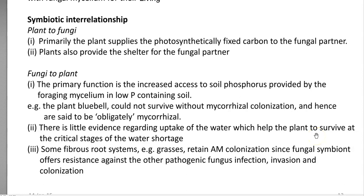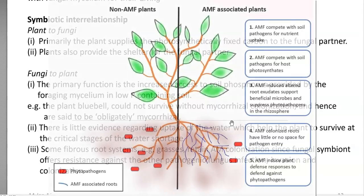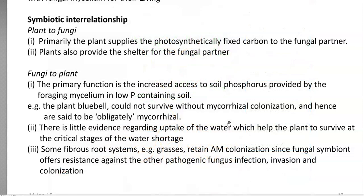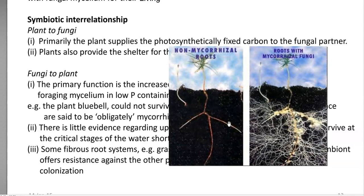Another point is that mycorrhizal association can help in taking up water for the plant system, aiding survival during critical stages of water shortage — though very little scientific evidence is available for this. The association of herbuscular mycorrhizal with plants that have fibrous root systems such as grasses can help those plants survive certain pathogenic fungal infections. The fungal association increases the plant's resistance towards pathogenic fungi invasion and colonization, because the mycorrhizal fungi already colonize the root region, leaving no space for pathogens to invade.